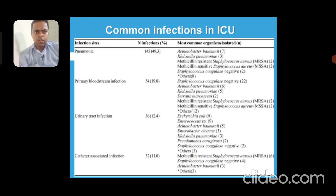Common infections in the ICU include pneumonia, bloodstream infections, and urinary tract infections. These are the types of infections that can occur in the hospital ICU, often associated with devices.